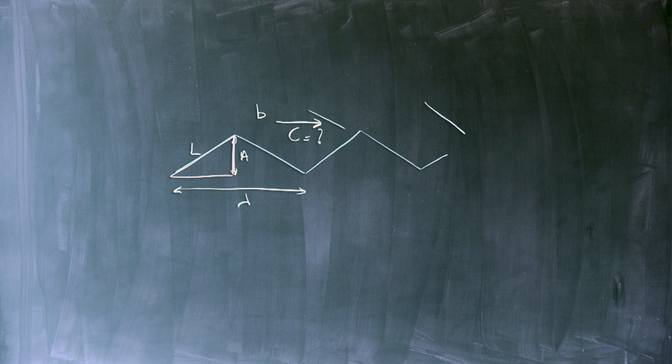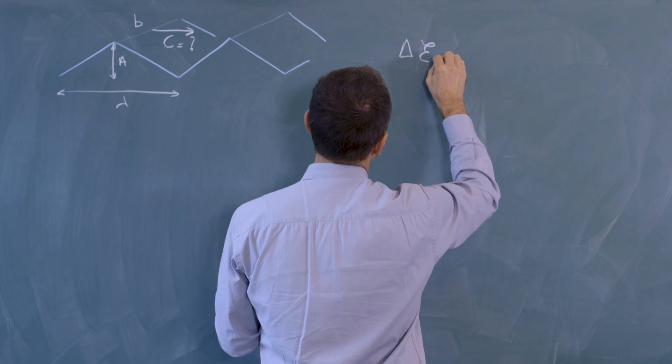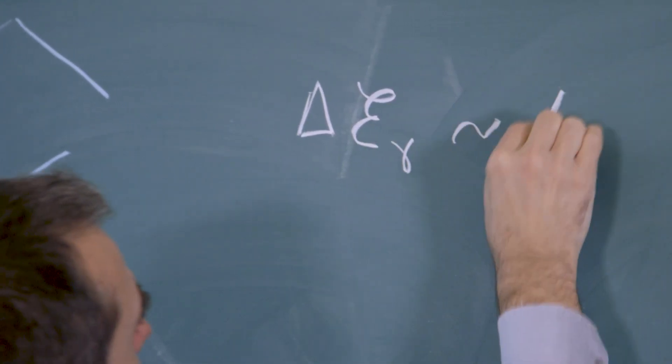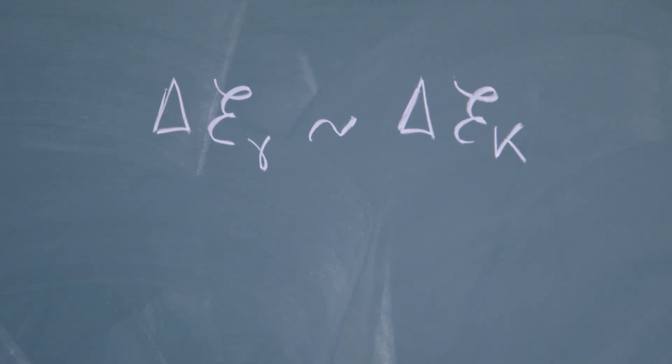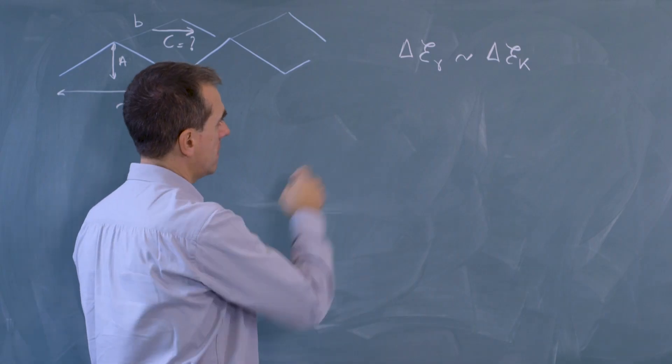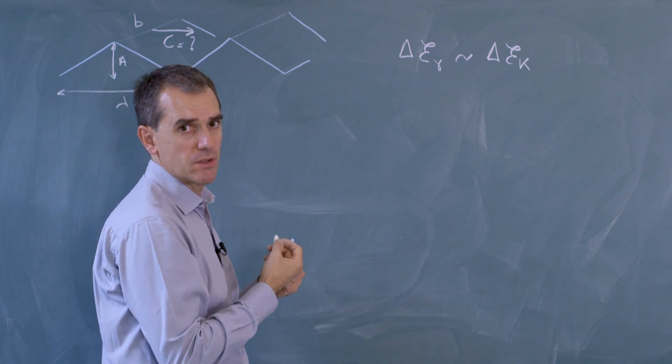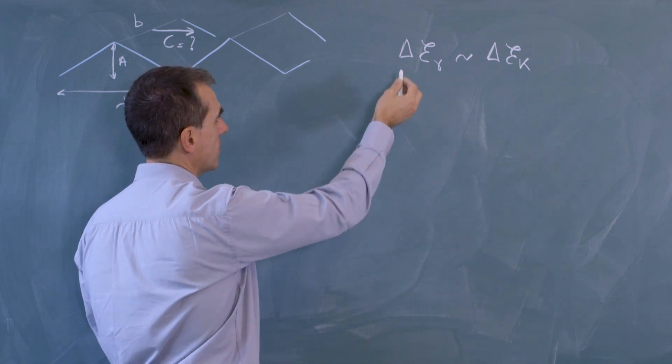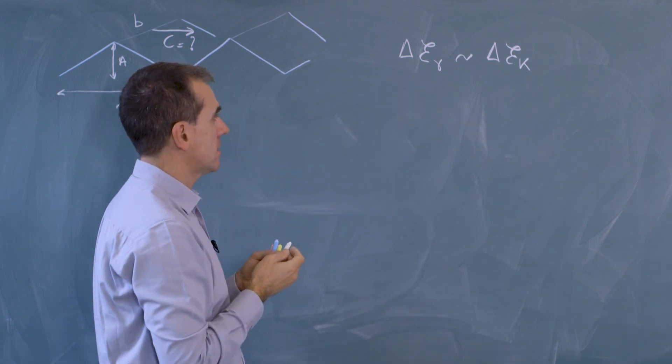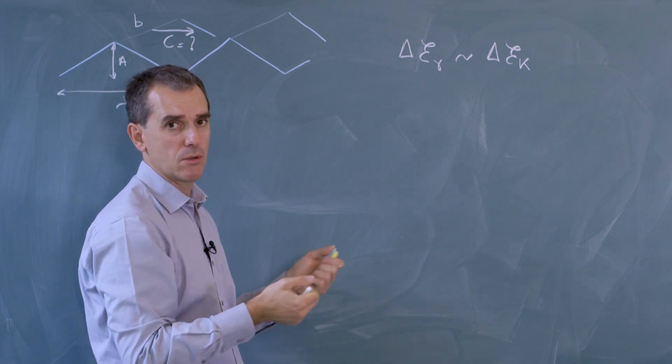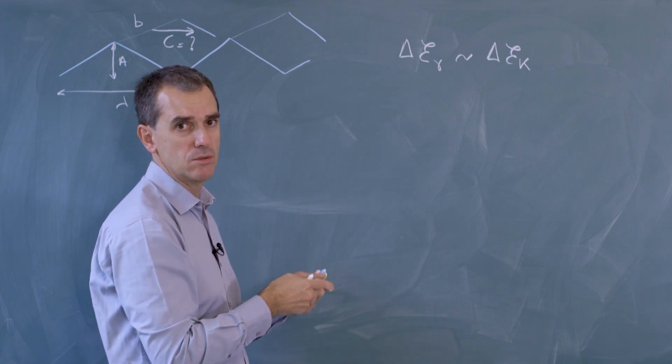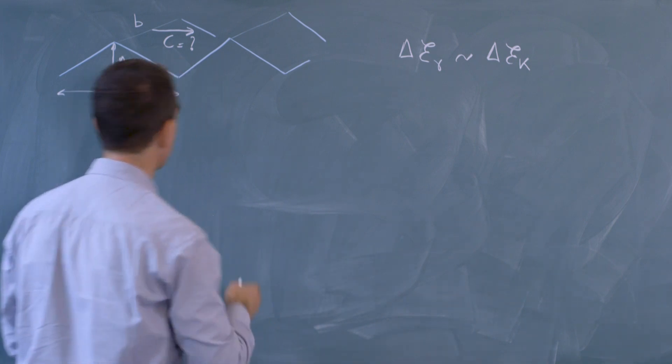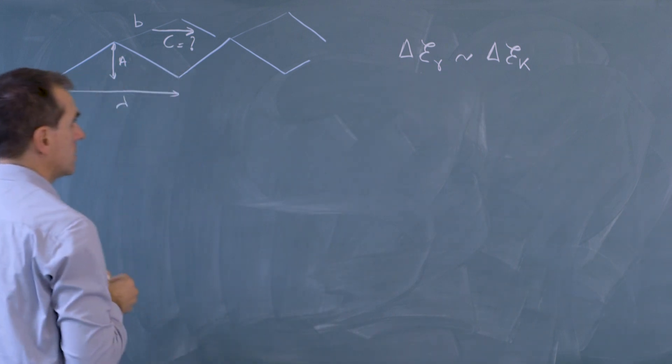As always with waves, this propagation velocity will result from a balance between a potential energy and a kinetic energy. And we will have a transfer of potential to kinetic. And this balance will give us an expression for the velocity. So we have to express first what is the potential energy that we get when we perturb the interface, and then the kinetic energy. And by balancing the two, we will get the velocity. So we will first start by the potential energy.